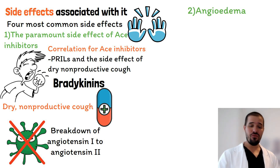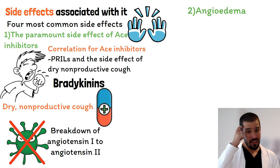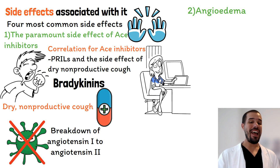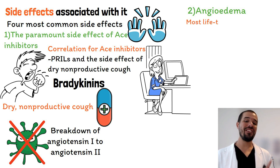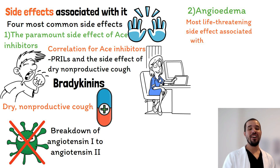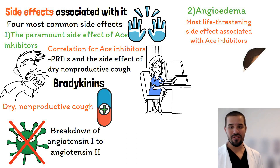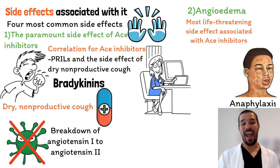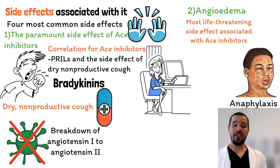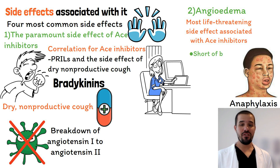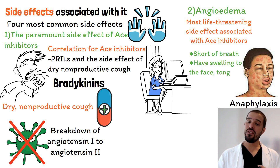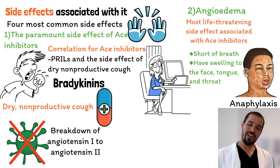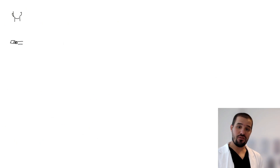Side effect number two is angioedema, and this is a very important sign and symptom for a nurse to monitor for. It is the most life-threatening side effect associated with ACE inhibitors. Angioedema resembles an allergic reaction, specifically anaphylaxis. When a patient exhibits signs and symptoms of angioedema, they're going to be short of breath with swelling to the face, tongue, and throat.